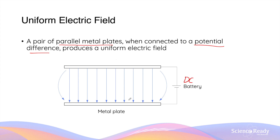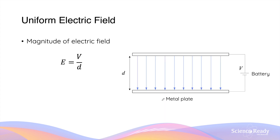Between the pair of parallel metal plates, you have a uniform electric field. The magnitude of this uniform electric field is given by the voltage or the potential difference between the metal plates divided by the distance d between the two metal plates. The voltage has a unit of volts, while the distance d has a unit of meters, so the usual SI unit for a uniform electric field is volts per meter.